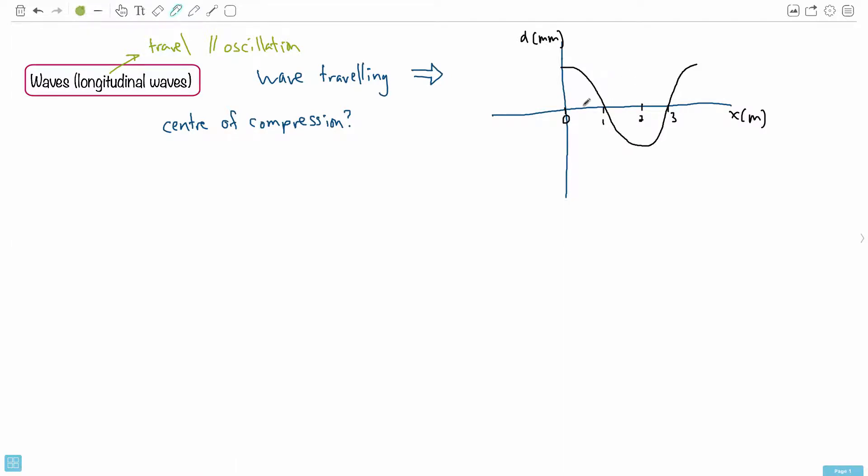So the way you have to think about it is these particles, just imagine you're just looking at one particle. It's going to move to the right, then to the left. It just goes right and left. It just goes back and forth. So that's what one particle does.